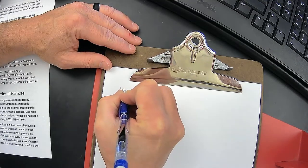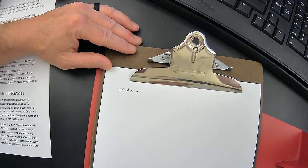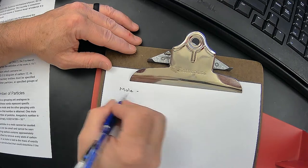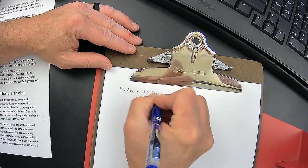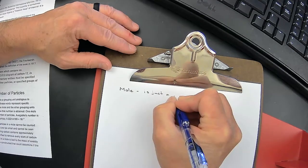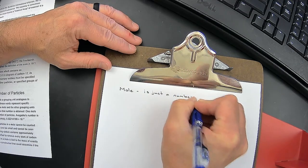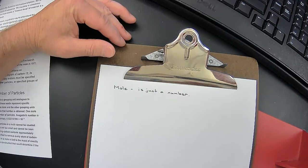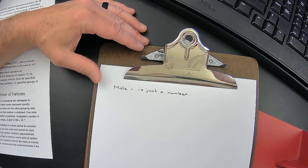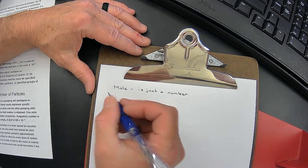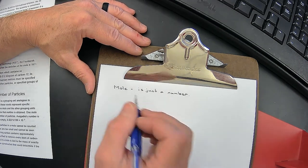The first thing I'd like you to do in your notebook is put this definition: A mole is just a number. It's a word that refers to a number. In our English language, we have a couple of words that refer to a number.